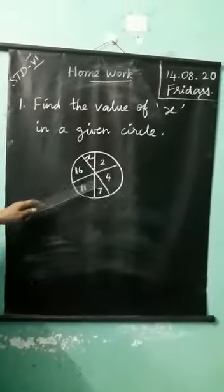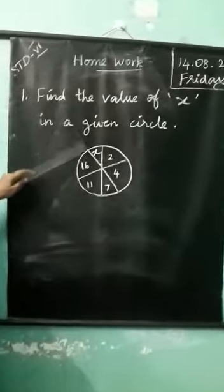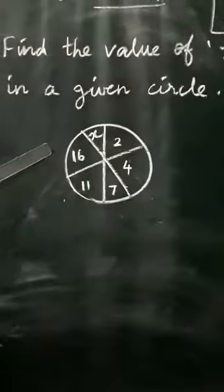See the circle. The numbers are given below. You find the x value. Okay, children. Do your homework properly. Thank you.